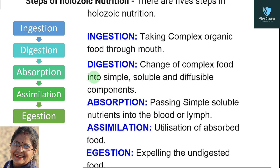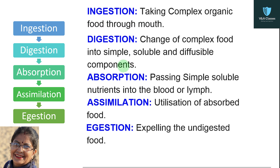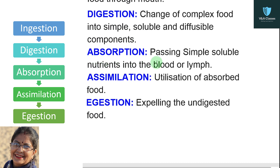Let's go through each step. First is ingestion: taking complex organic food through the mouth. Second is digestion: the change of complex food into simple, soluble, and diffusible components. Third is absorption: passing the simple soluble nutrients into blood and lymph. Fourth is assimilation: the utilization of absorbed food by the body.